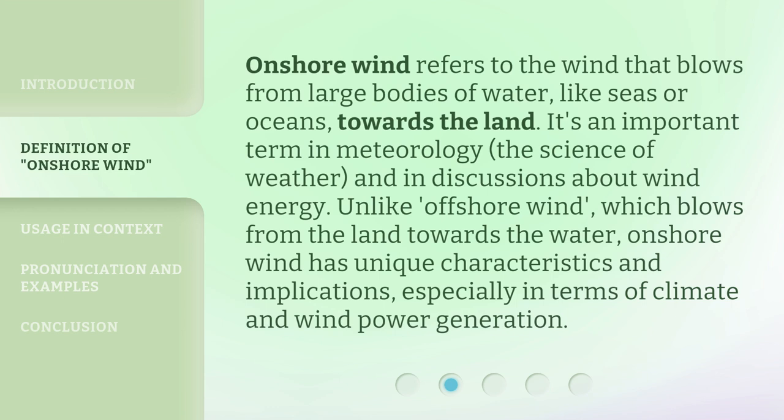Onshore wind refers to the wind that blows from large bodies of water, like seas or oceans, towards the land. It's an important term in meteorology, the science of weather, and in discussions about wind energy. Unlike offshore wind, which blows from the land towards the water, onshore wind has unique characteristics and implications, especially in terms of climate and wind power generation.